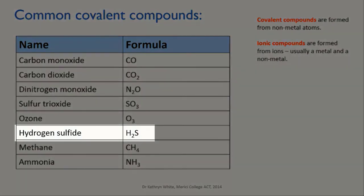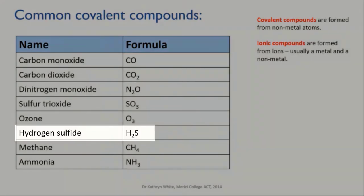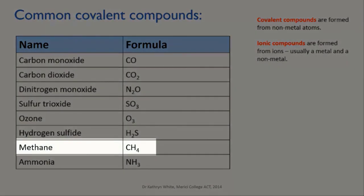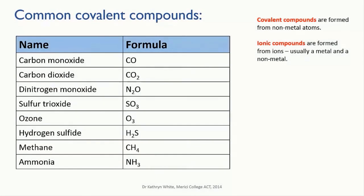It absorbs UV radiation from the sun before it gets down to us on the surface. Hydrogen sulfide is rotten egg gas. Methane is the primary component of what we call natural gas, and it's also produced by bacteria and in farts. Detecting methane is one of the tasks of the Curiosity rover that NASA sent to Mars. It's up there now, since it's thought that this will give us a clue as to whether there is or was any forms of life on Mars.